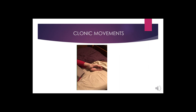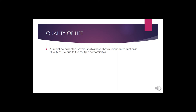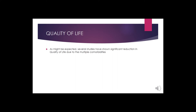Several studies have shown significant reduction in quality of life due to these multiple comorbidities, making recognition in our practices extremely important. These patients typically have several associated comorbidities such as fibromyalgia, migraine, IBS, and chronic fatigue. A few quick questions can help screen: Were you double-jointed as a kid? Did you contort your joints to entertain friends? Did your shoulder or kneecap dislocate? A significant number of patients with fibromyalgia and migraines will answer yes.